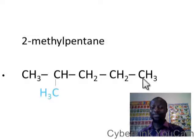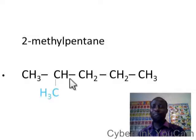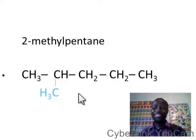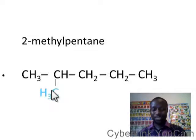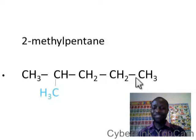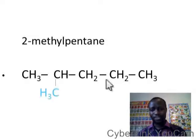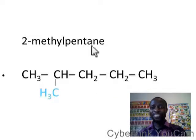Why is it called 2-methylpentane? Because the methyl group is attached to carbon number 2. If you start counting from the other end you get 1, 2, 3, 4 — that would make it 4-methylpentane, which is wrong. It is a longer distance, so we use the shorter count: 2-methylpentane is correct.